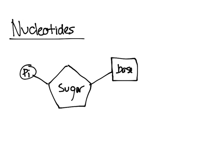For this video, we're mostly going to talk about ATP, which has three phosphate groups. There are also other nucleotides, such as adenine, guanine, and the things that make up DNA and RNA.